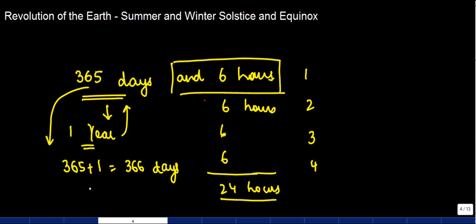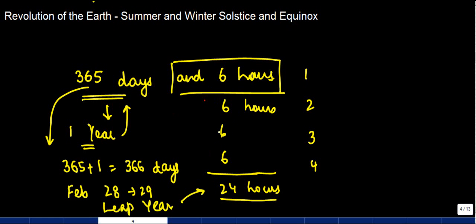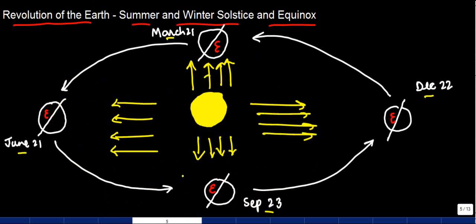In a leap year, the month with more days is February. Normally we have 28 days in February, but in a leap year we consider 29 days. This happens because every year we keep adding six hours, and once we reach the fourth year we have 24 hours, so we add one day to make it 366 days.